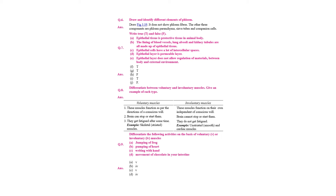Draw and identify different elements of phloem: sieve tube, companion cell, phloem parenchyma, and phloem fibers. Question 7, true or false: epithelial tissue is protective in animal body — true; lining of blood vessels, lungs, and kidney tubules are made up of epithelial tissue — true.